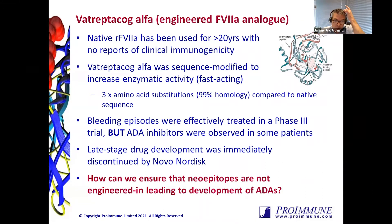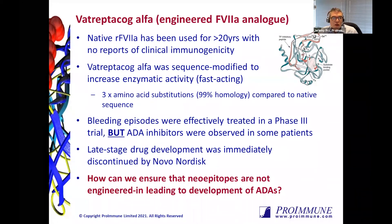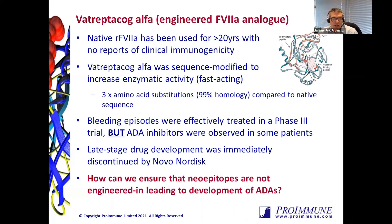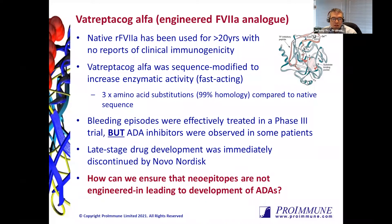To give an example of ProPresent data, I'll take you through a case study looking at Eptacog alpha, which is an engineered Factor VIIa analogue. Native Factor VIIa has been used for many years with no problems. Novo Nordisk decided to engineer a sequence variant with three amino acid substitutions to increase the enzymatic activity and make it more fast-acting. Unfortunately, nothing was observed in phase one or two trials, but when it got to phase three, some bleeding episodes were observed in patients. After that, some anti-drug antibody inhibitors were observed in some patients, and so the late-stage drug development was immediately halted. The question was asked: how can we ensure we don't engineer in unwanted epitopes in the future?